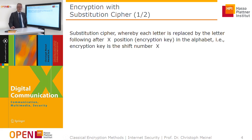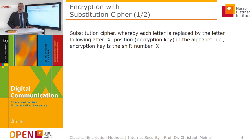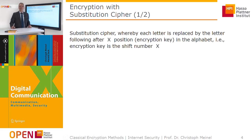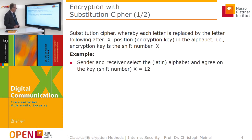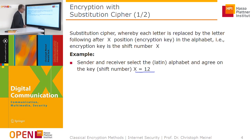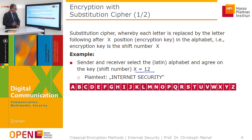Now let's consider the substitution cipher, whereby each letter is replaced by the letter following after X positions in the alphabet. The shift by X positions is the encryption key. Sender and receiver agree on the key X equal to 12, meaning the alphabet is shifted by 12 positions.